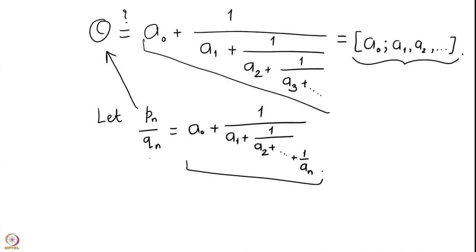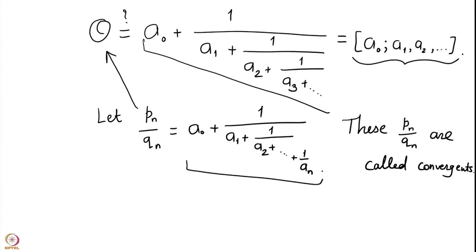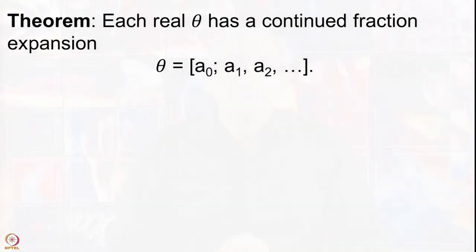These rational numbers are called convergents because they converge to the real number theta. This is the theorem we want to prove — that we actually have equality. On the right side of the equation we have the continued fraction expansion a0, a1, a2, dot dot dot, and on the left hand side we have the real theta. The a0, a1, a2 are obtained as described in the previous lecture, and we want to prove that the limit of the convergents is actually theta.